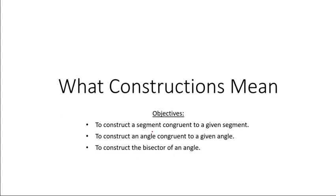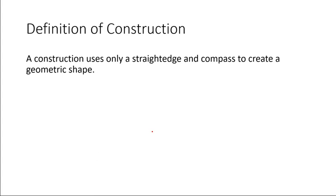As we begin, we first must understand what are the rules for creating a construction. What it means is we're using only a straight edge — something that is straight, maybe like a ruler, or it could be the edge of a protractor, or even the edge of a book. Any sort of straight edge we can use. And then we also can use a compass, the geometry compass that creates circles. When we are making these constructions, we can only use the compass and the straight edge.